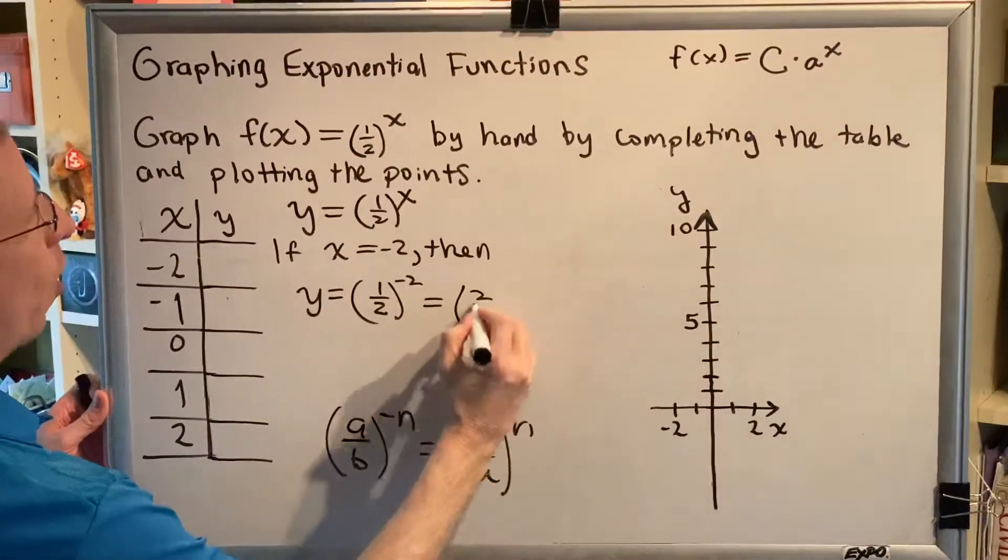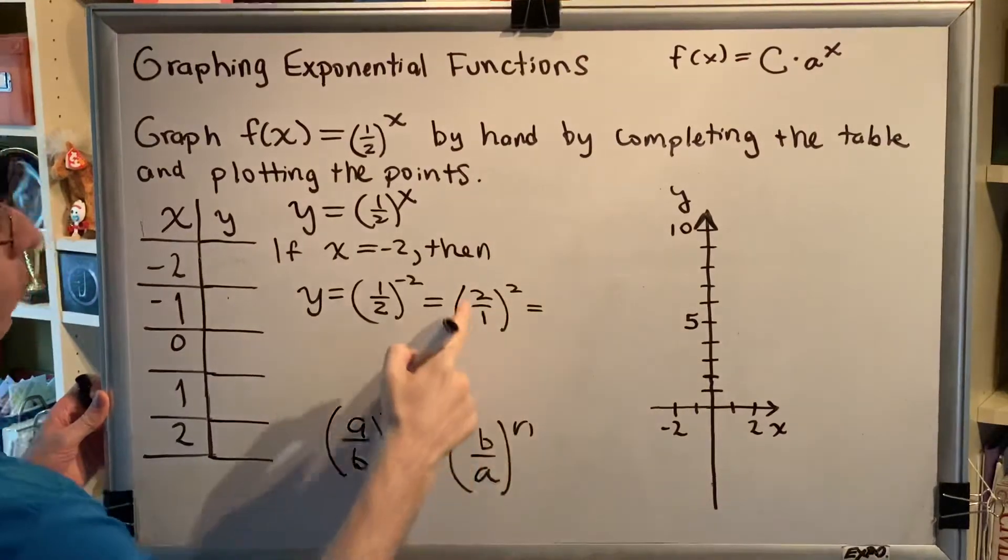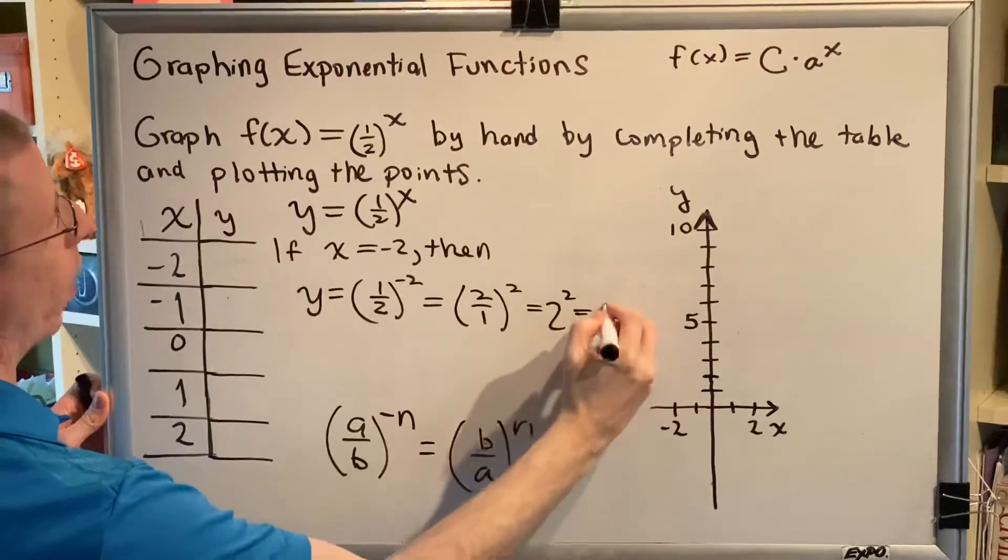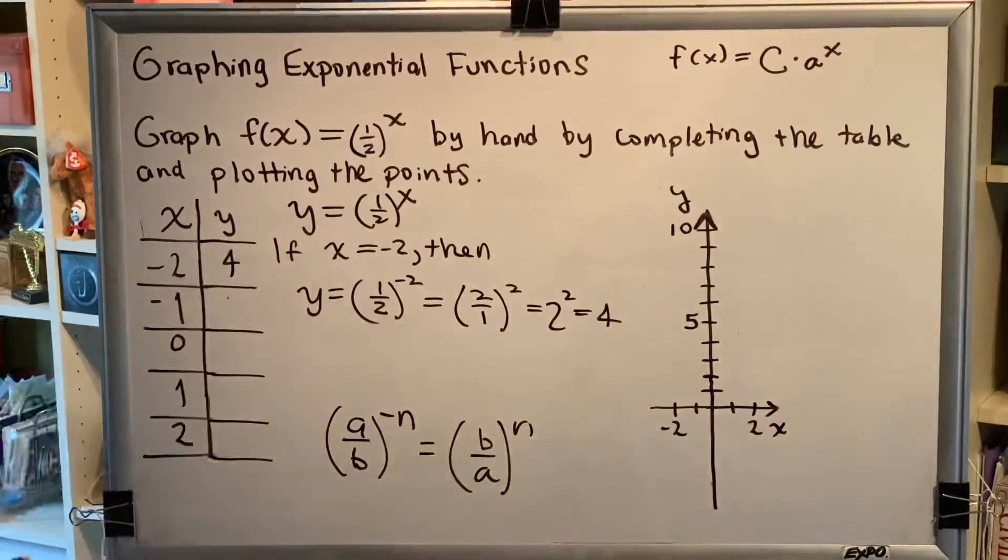We're going to write this as (2/1)^2. Of course, 2/1 is just 2 and 2 squared is 4. So when x equals -2, y is 4.